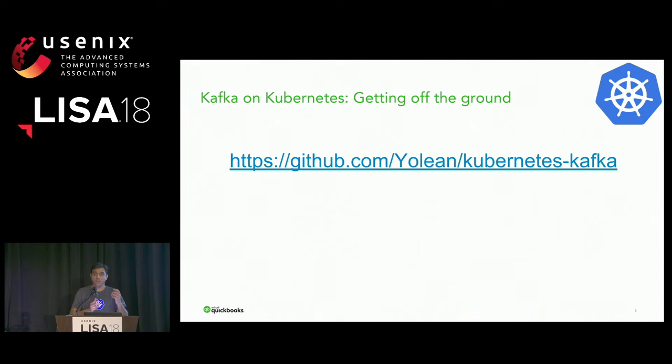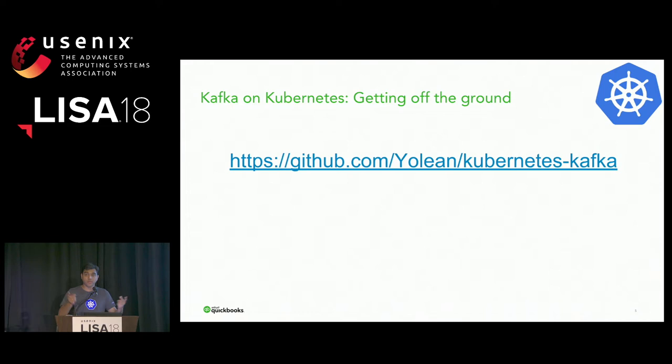We thought Kubernetes conceptually has a lot of good constructs for running Kafka and we should try it out. Like all talented engineers, the first thing we did was find if someone else had done it. We Googled for this and found a really good repo by a company called Yolene.com. If someone here is from Yolene.com, please get in touch — I owe you a drink or Halloween cookies.